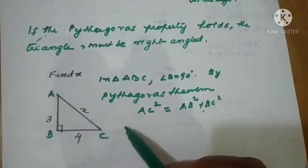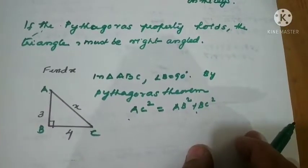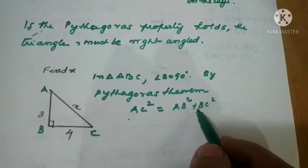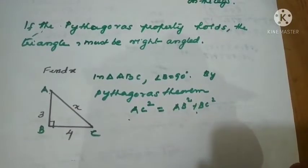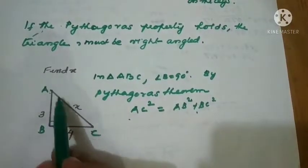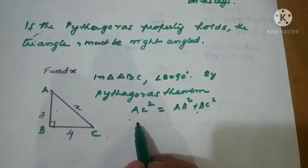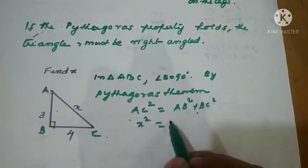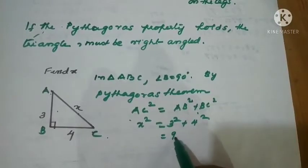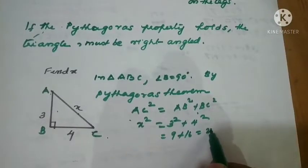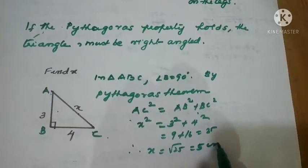AC square equals AB square plus BC square. Here, angle B is 90 degrees. Finding x: x is AC. So x square equals 3 square plus 4 square, which equals 9 plus 16, which equals 25. Therefore x equals root of 25, which equals 5 centimeters.